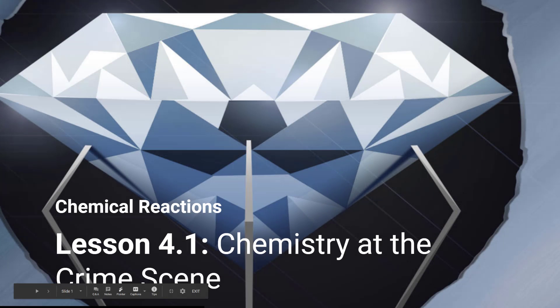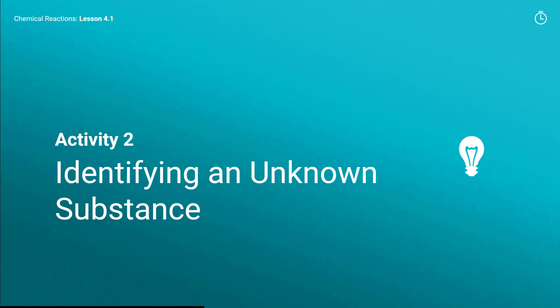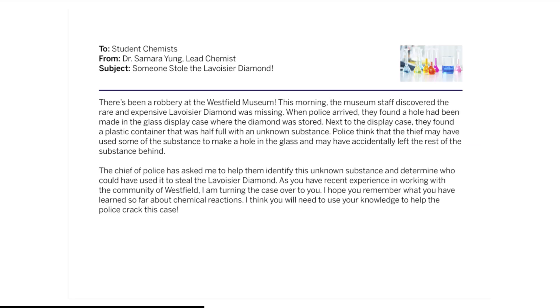Chemical Reactions Unit, Lesson 4.1: Chemistry at the Crime Scene, Activity 2 — Identifying an Unknown Substance. You will be using what you've learned in this unit to identify an unknown substance. You performed a similar task in Chapter 1 when you identified the reddish-brown substance coming out of Westfield's water pipes. Identifying the unknown substance in this lesson will be the first step in a three-day investigation where you will use your knowledge of chemical reactions to help the police investigate a robbery.